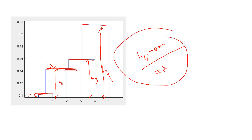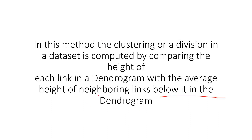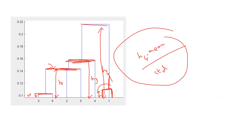There is one very important concept to understand clearly. Suppose there is a link somewhere else connected to two elements going upward. When calculating the inconsistency factor for a particular link, you should not consider that separate link — the statement clearly says 'neighboring links below it in the dendrogram.' So only links that are directly below the particular link are considered, not separate branches.